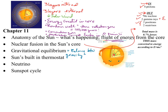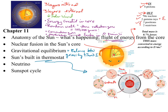Gravitational equilibrium — I think you had a homework question about this. Basically, our sun is not expanding nor contracting because the inward force of gravity is balanced by the outward force of the energy it's creating in its core. The sun does wiggle a little bit — it basically has its own built-in thermostat. If it cools down slightly, it contracts and heats up. If it gets too hot, it expands and cools down.